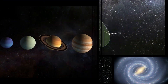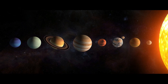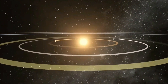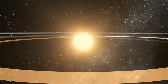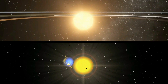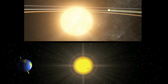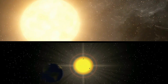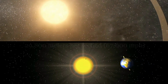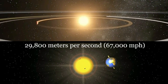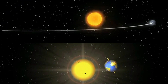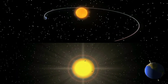Celestial bodies exhibit several types of speeds. Orbital speed refers to how fast a celestial body travels around another object it's gravitationally bound to. The speed varies depending on the distance from the central object and the shape of the orbit — circular versus elliptical. For instance, Earth's average orbital speed around the Sun is roughly 29,800 meters per second (67,000 miles per hour), but it moves slightly faster when closer to the Sun, known as perihelion.